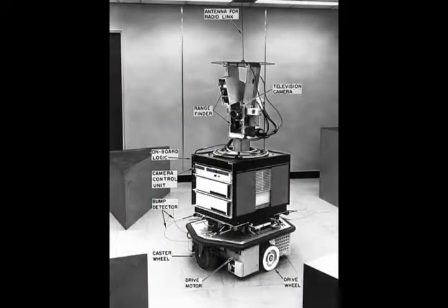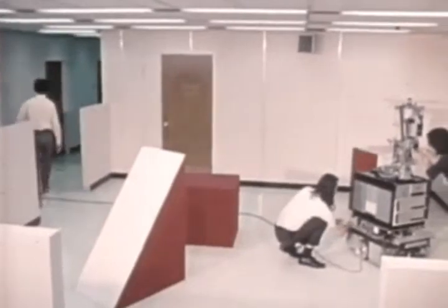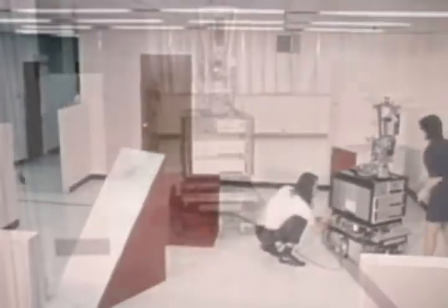In the mid-1960s at SRI, then called the Stanford Research Institute, I was working on a robot called SHAKEY. SHAKEY had several programs — some for dealing with perception, we had machine vision programs for example, and some controlled SHAKEY's actions as it moved around in its environment.